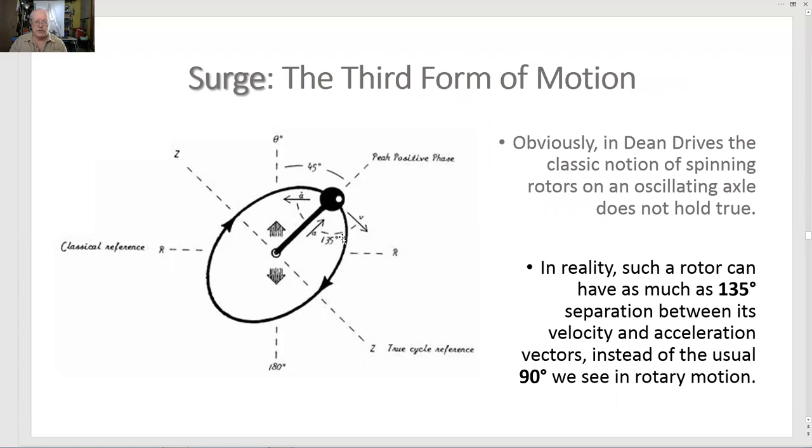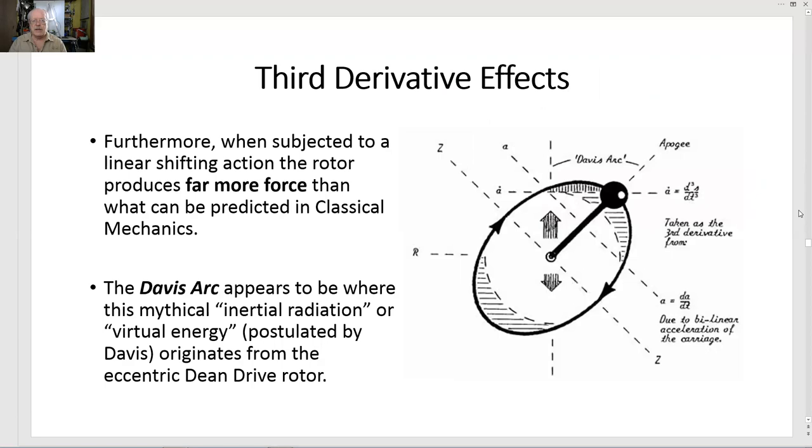135 degrees. So, 90 degrees plus 45. Third derivative effects. Furthermore, when subjected to a linear shifting action, the rotor produces far more force than what can be predicted in classical mechanics. The Davis arc appears to be where this mythical inertial radiation or virtual energy, postulated by Davis, originates from the eccentric dean drive rotor.